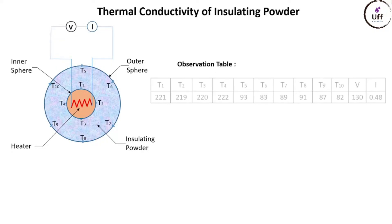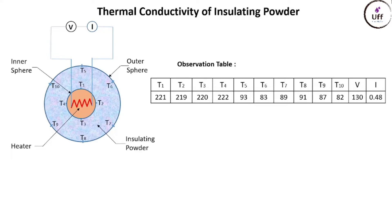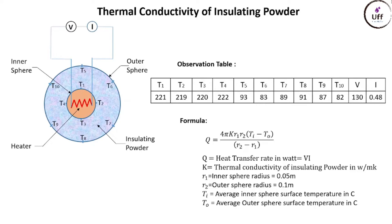From the observation table: T1 is 221°C, T2 is 219°C, and so on up to voltage 130 volts and current 0.48 amperes. For calculations we use the formula for one-dimensional steady state heat conduction through spheres. Q is the heat transfer rate in watts, calculated as voltage times current, assuming all electric energy converts to heat. K is the thermal conductivity of insulating powder in watts per meter kelvin.